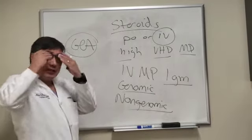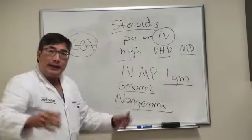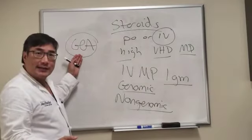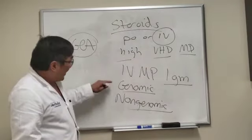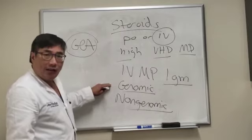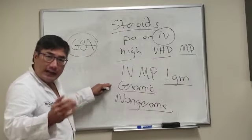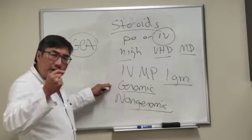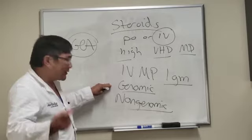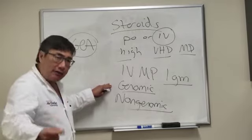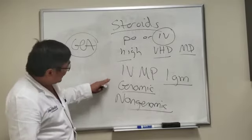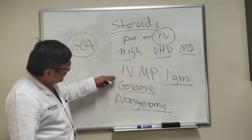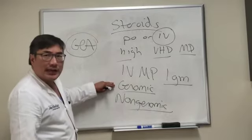The genomic effects are the ones that will tell all the lymphocytes to go home, reduce the lymphocytic infiltrate, and tell the giant cells to stop doing what they're doing. That takes longer — hours to days — because it has to be incorporated into the genome, translocated, and translated.